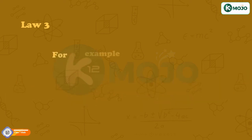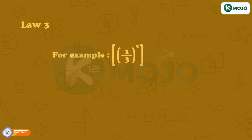For example, 1/3 raised to the power 5, whole raised to the power 3. Here both the exponents are 5 and 3, which equals 1/3 raised to the power 5 into 3, that is 1/3 raised to the power 15.